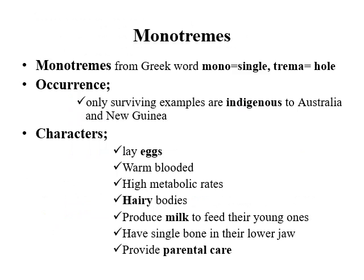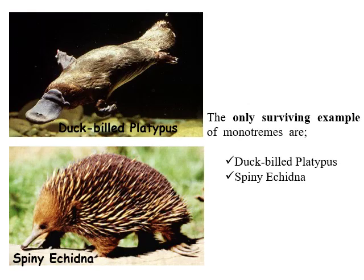Monotremes, or egg-laying mammals, are the only surviving examples indigenous to Australia and New Guinea. Monotremes are warm-blooded, have high metabolic rates, hairy bodies, and produce milk to feed their young. They have a single bone in their lower jaw and provide parental care. The only surviving examples of monotremes in the Australian region are the duck-billed platypus and the spiny echidna.